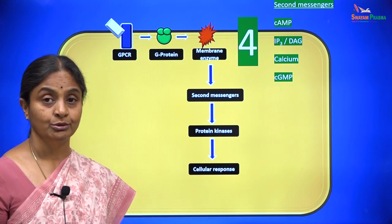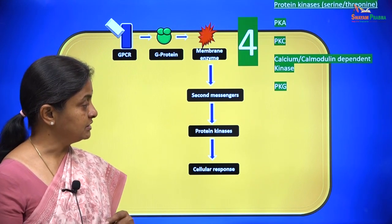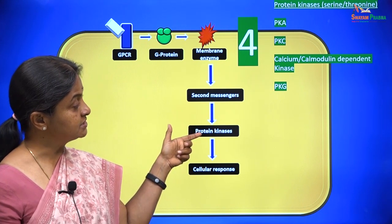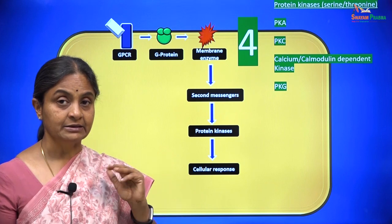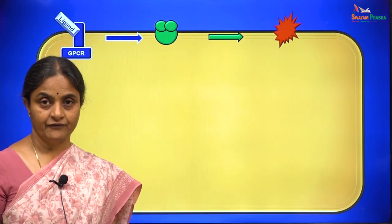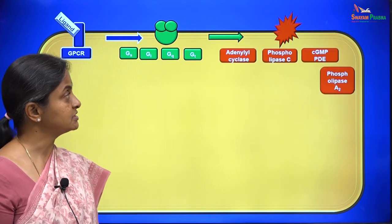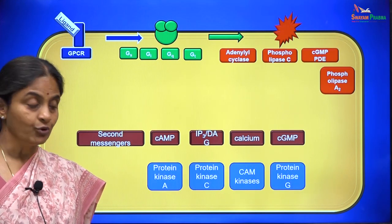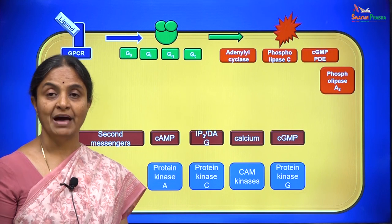These are the four molecules referred to as second messengers. We will then consider four protein kinases within the cell — these are serine-threonine kinases: protein kinase A, protein kinase C, calcium-calmodulin dependent kinases, and protein kinase G. We have now seen four types of G proteins, four membrane enzymes, four second messengers, and four protein kinases, and we will see how these individual entities map on to each other.